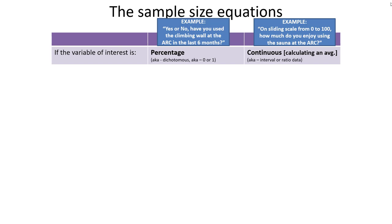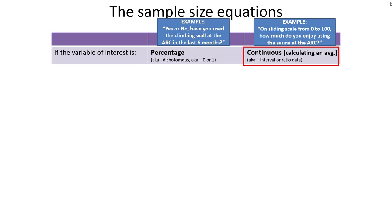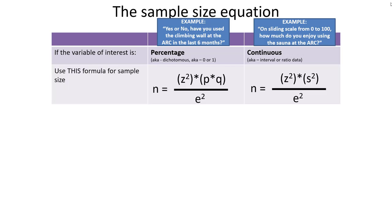There are only two sample size equations we're going to focus on in this class, and they're very similar. The only difference depends on what type of variable we're dealing with — whether we're calculating a percentage, which uses a dichotomous or nominal variable coded as zero or one with exactly two categories, or a continuous variable. Continuous variables are interval or ratio level data, the only types where we can calculate an average.